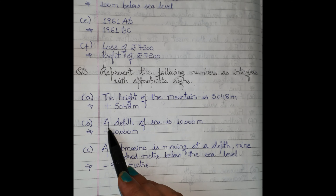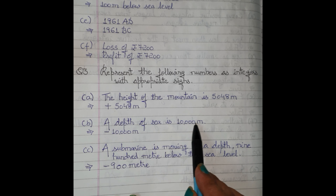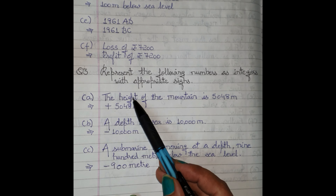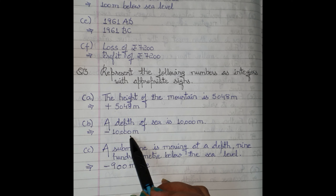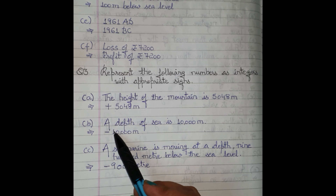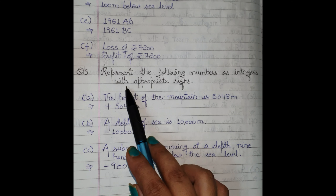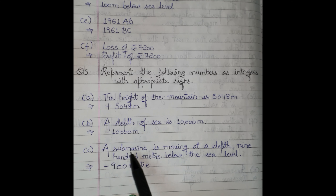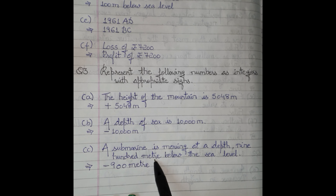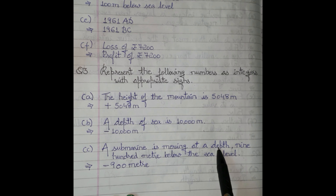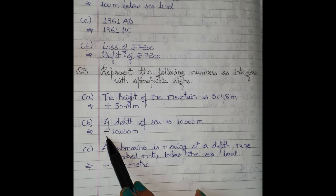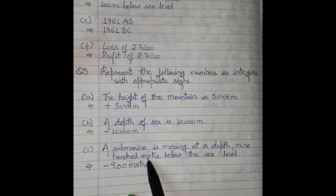Part b: a depth of sea is 10,000 meters. Depth is represented with a negative sign, so the answer is minus 10,000 meters. It is compulsory to put the sign here. Part c: a submarine is moving at a depth of 900 meters below sea level. Submarines move under water, so this is depth — minus sign. The answer is minus 900 meters.